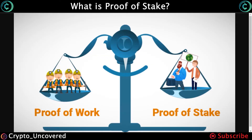So what is proof of stake? Proof of stake is a type of consensus mechanism to secure the blockchain system. The other popular type of consensus mechanism is proof of work, used by Bitcoin.